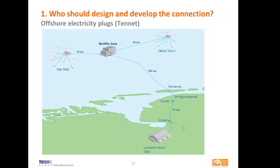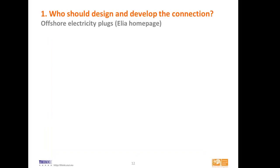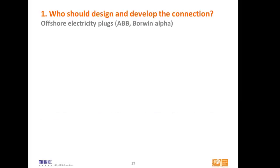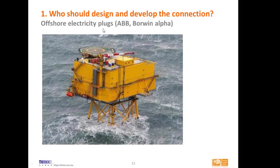How does this plug actually look? Here is a nice picture from the Elia homepage showing an idealized representation. But of course it doesn't really look like that — here is a picture of the only plug that has actually been constructed. It is roughly the size of a barn or a house. What you see at the top is not a trampoline — it is a helicopter platform so that people can arrive and do maintenance. This structure is actually more than a plug; it is a converter station. The very far offshore wind farms are connected to shore with DC, so this platform converts AC from the wind farms to DC for the cable to shore, and then onshore the DC is converted back to AC for the grid.